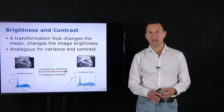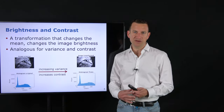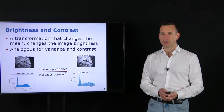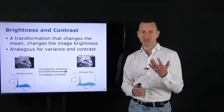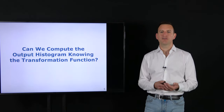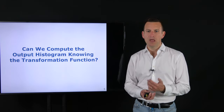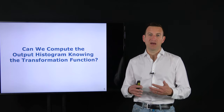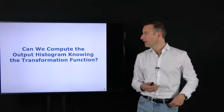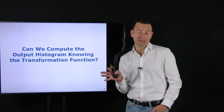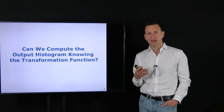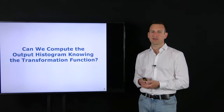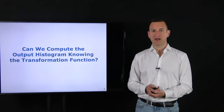By using a transformation function F that maps one image into another, we can see based on how it changes the histogram whether it changes brightness, contrast, computes the negative of the image, and so on. Today we want to understand these transformation functions better and get an idea of how we can design them so that the resulting image has certain desired properties.